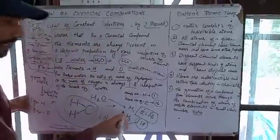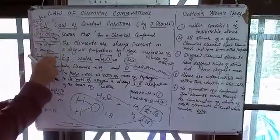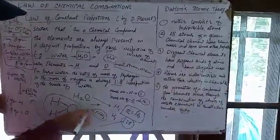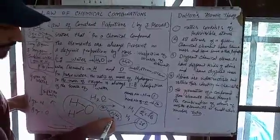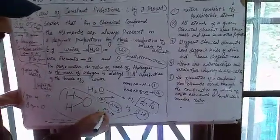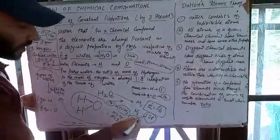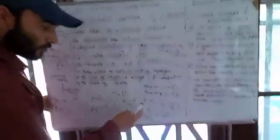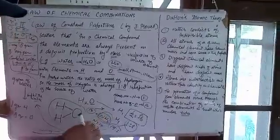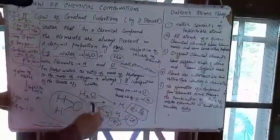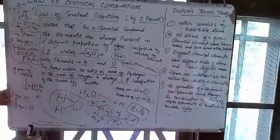This is the law of constant proportion. A similar case applies to ammonia NH₃. The mass number of nitrogen is 14 and there are 3 hydrogen atoms, so the ratio of nitrogen to hydrogen in ammonia is 14:3. Always 14 grams of nitrogen will react with 3 grams of hydrogen to form ammonia.